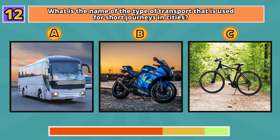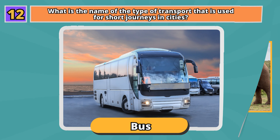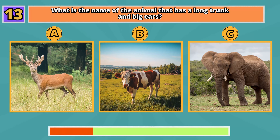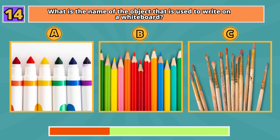What is the name of the type of transport that is used for short journeys in cities? Bus. What is the name of the animal that has a long trunk and big ears? Elephant.